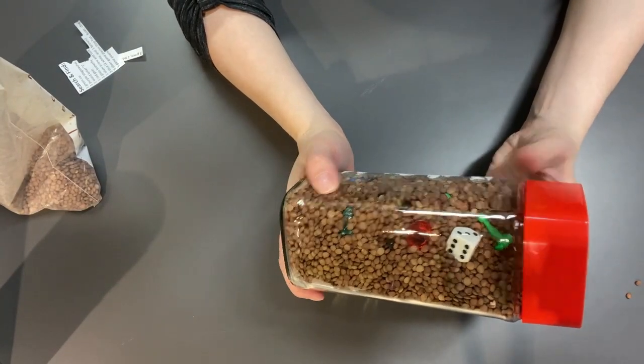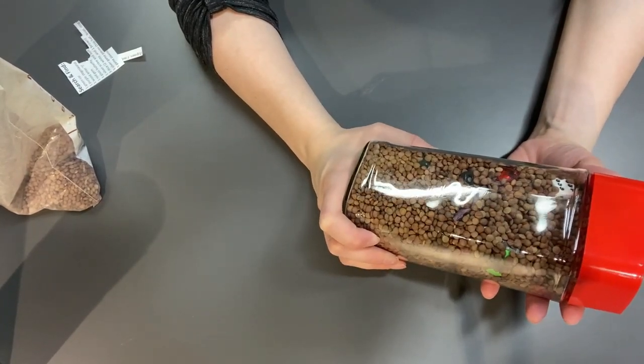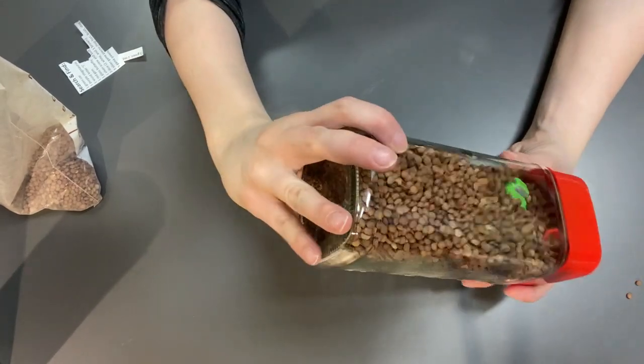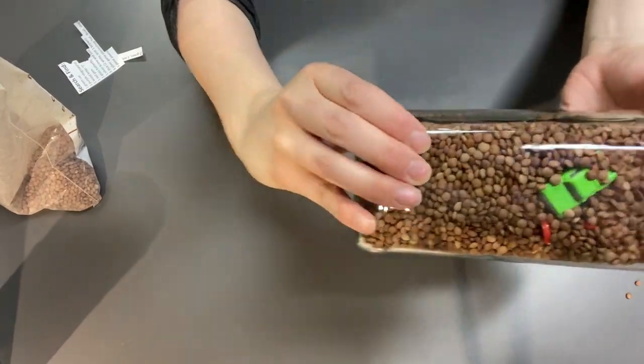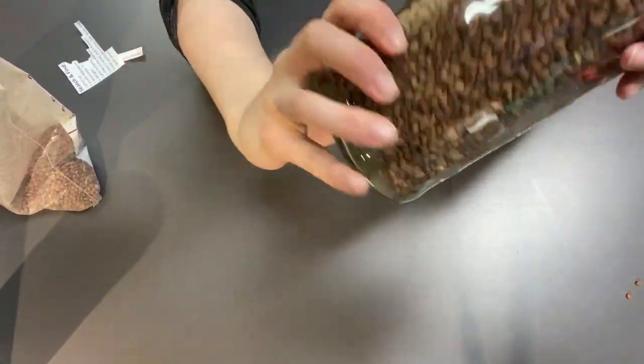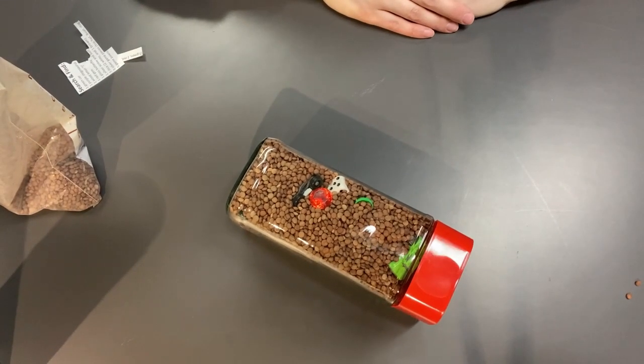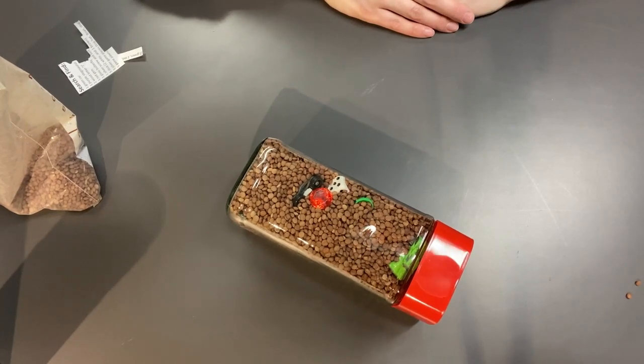There you go. That's how you make a DIY I Spy bottle or sensory fun bottle. So I hope you try this at home. Have fun. Try different materials or themes. You could do one that's all ocean animals. That's been making a DIY I Spy bottle for DIY Fidget Toys. Thank you for joining me.